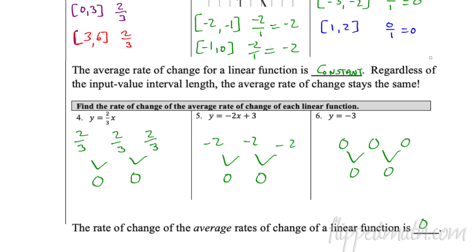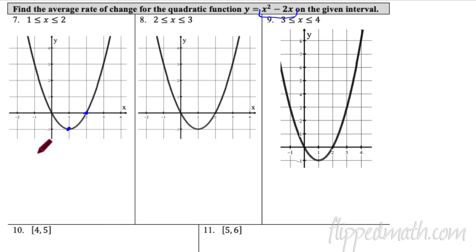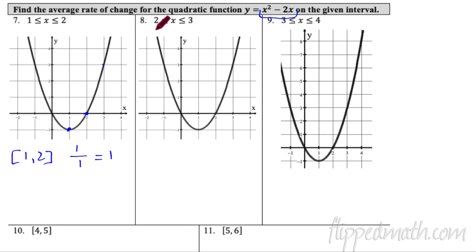Now let's move to quadratic functions. For number 7, the quadratic function is y = x² − 2x. We want the average rate of change on the interval where x goes from 1 to 2. Looking at those points on the graph, the slope is up 1 over 1, which equals positive 1.